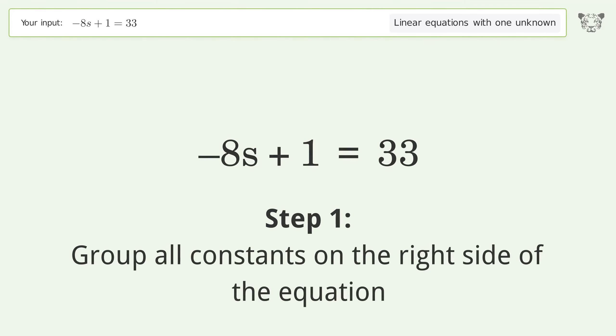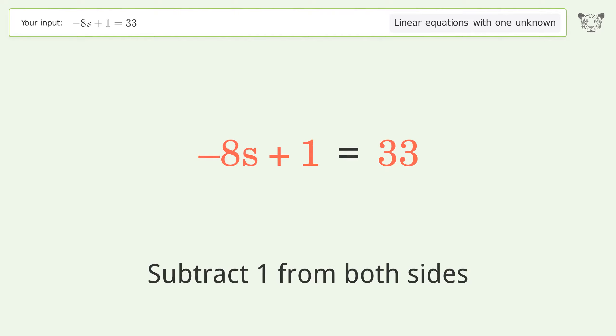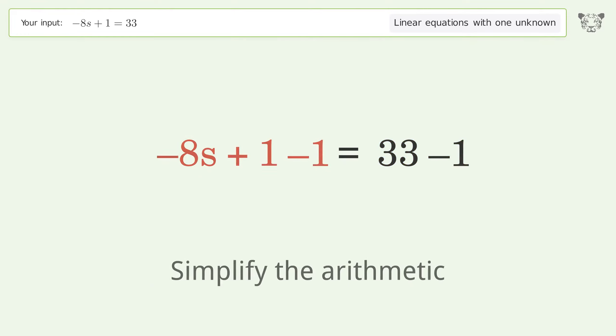Group all constants on the right side of the equation. Subtract 1 from both sides. Simplify the arithmetic.